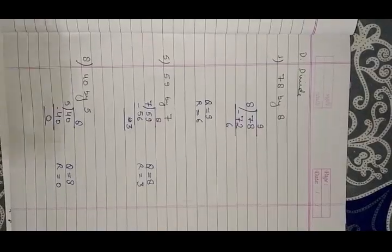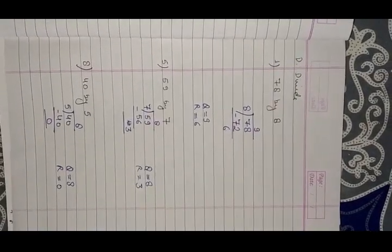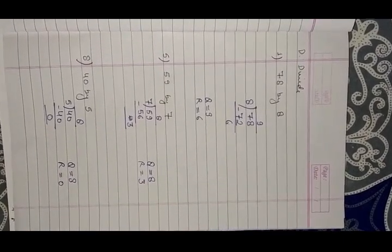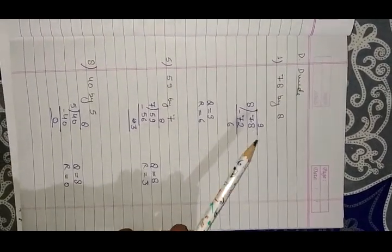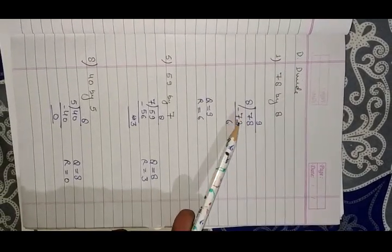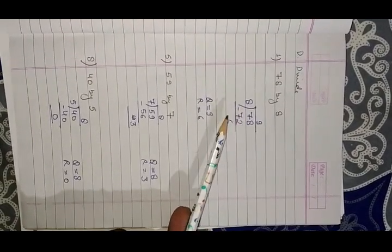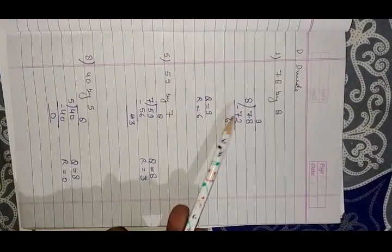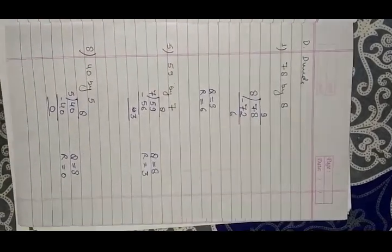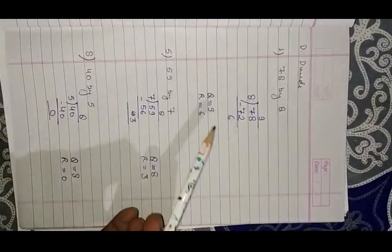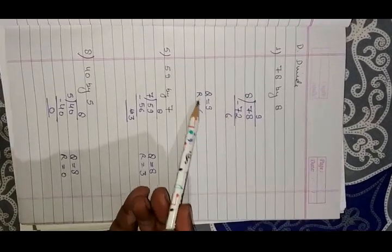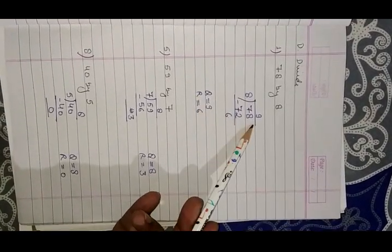Part D: 78 divided by 8. Start with the 8 times table: 8 eights are 64, 8 nines are 72, 8 tens are 80. The largest number smaller than 78 in the 8 times table is 72. So 8 nines are 72. Subtract: 78 minus 72 equals 6. The remainder is 6 and the quotient is 9.